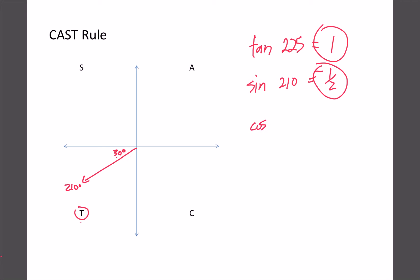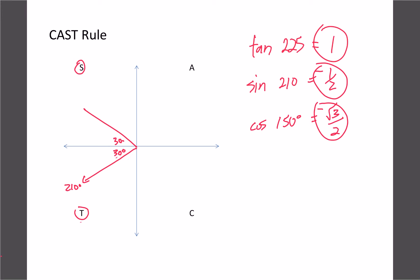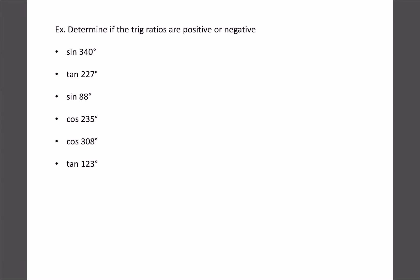For cosine of 150: that's in quadrant 2, with a reference angle of 30 degrees. Cosine of 30 is root 3 over 2. Because we're in the S quadrant, cosine is negative there. So negative root 3 over 2 is our final answer. The process is always the same: find the reference angle, look up the special triangle value, then use the CAST rule to determine the sign.